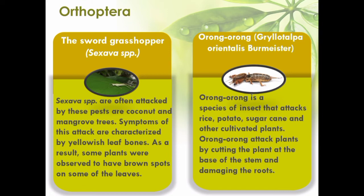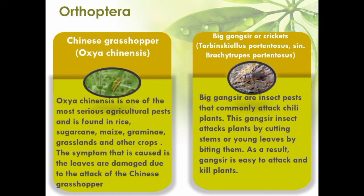The sword grasshopper, Sexava spp., often attacks coconut and mangrove trees. Symptoms of this attack are characteristic yellowish leaf bones. As a result, some plants will show brown spots on some of the leaves. Orang-orang, Gryllotalpa orientalis Burmeister, is a species of insect that attacks rice, potato, sugarcane, and other cultivated plants.